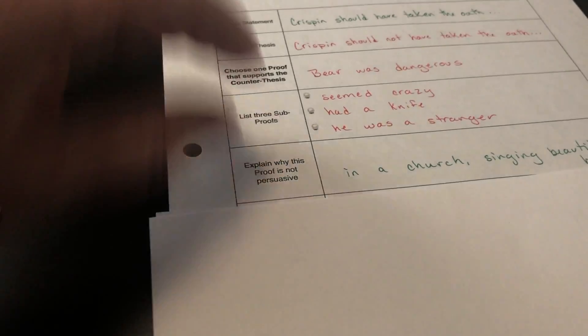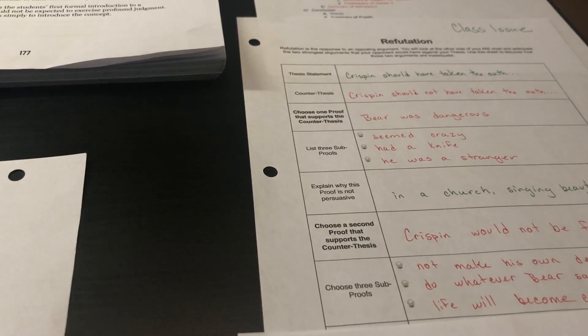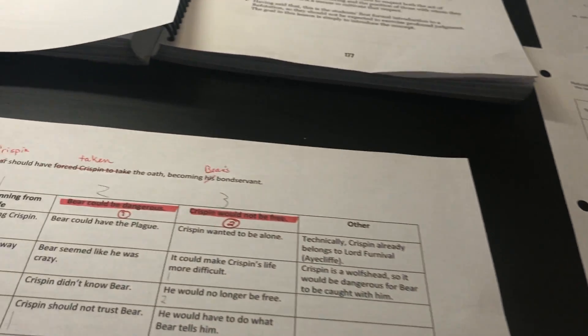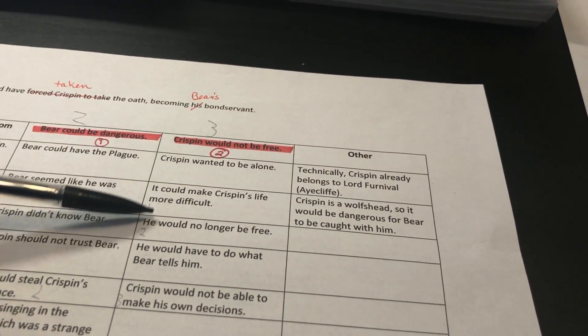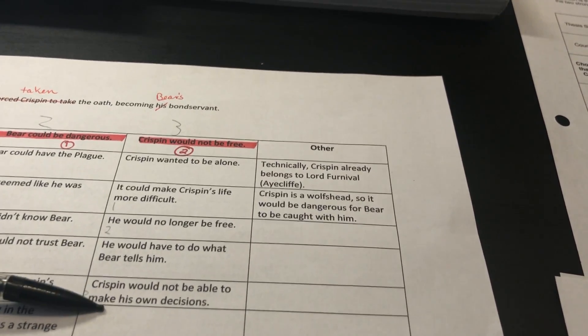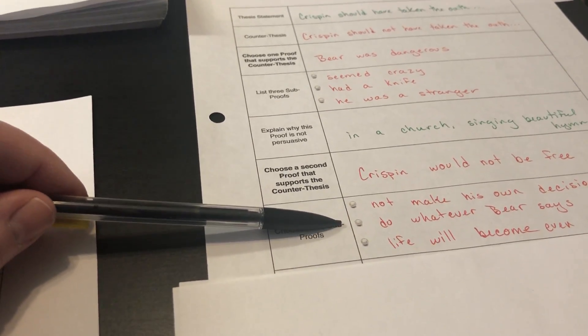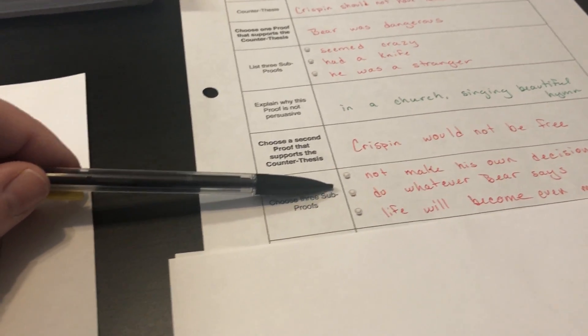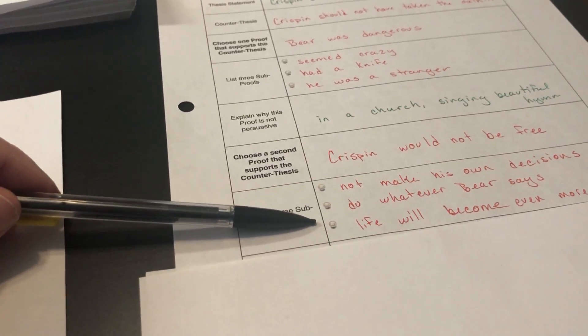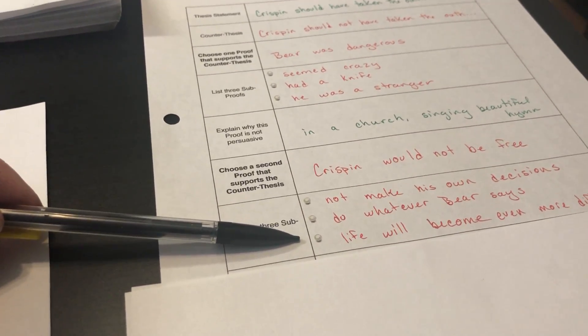So then we have to do it again. Our next one that we chose was that Crispin would not be free. We looked at our negative chart over here. We have Crispin would not be free, and we have all of these reasons to choose from. This is what we picked: he would not be able to make his own decisions, he'd have to do whatever Bear tells him, which could, in the end, make his life even more difficult than it already was. Was he jumping from the frying pan into the fire?